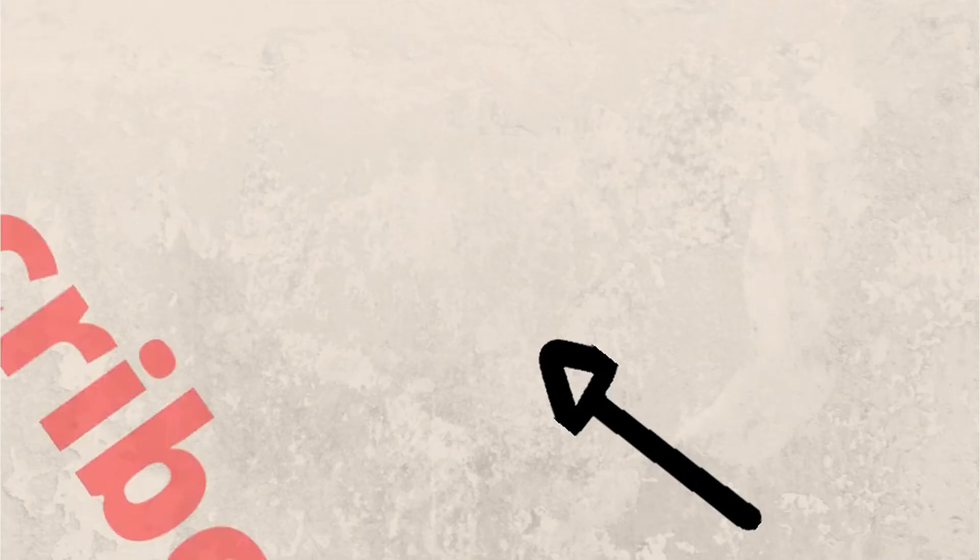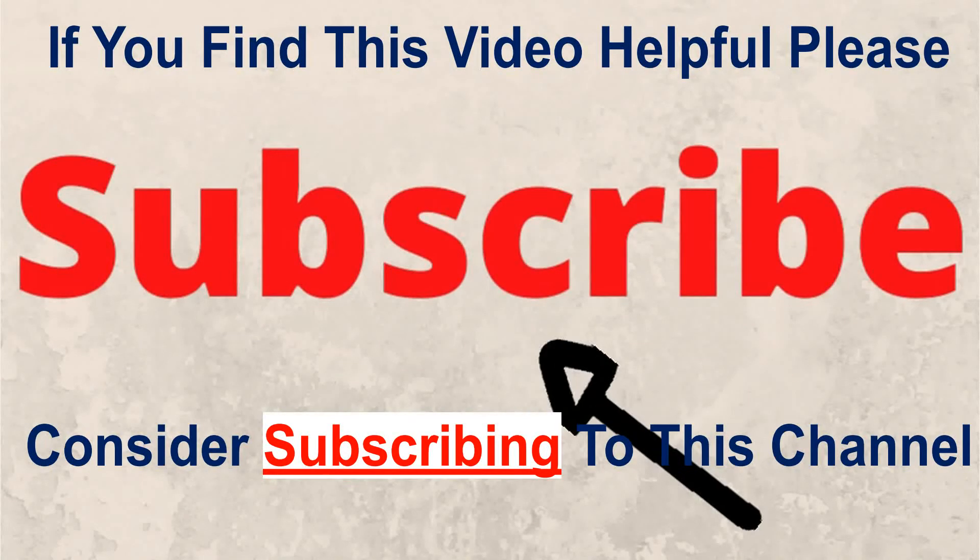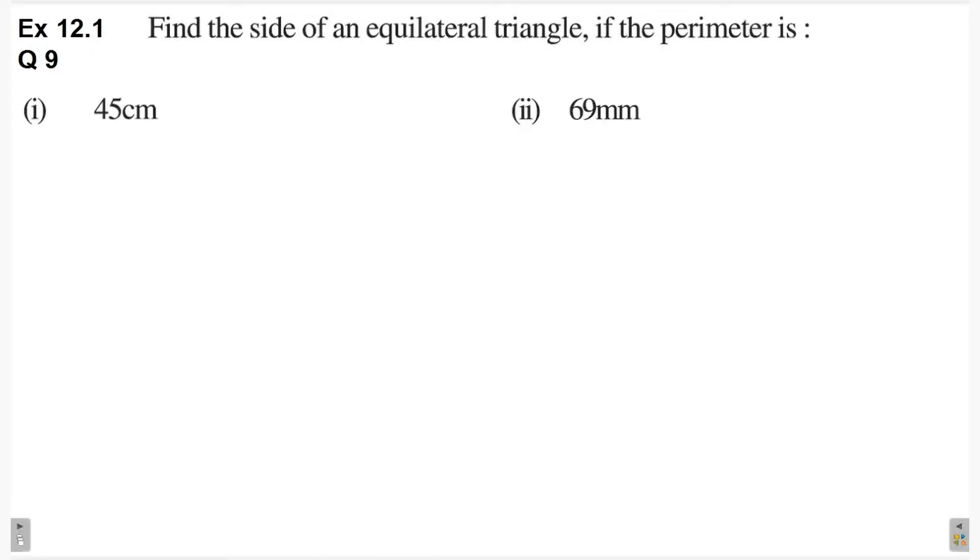Hello everyone, welcome back to this channel. In this video, we will solve question number 9 of exercise 12.1, class 6. Find the side of an equilateral triangle if the perimeter is, first part may 45 cm.